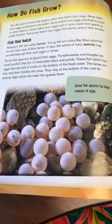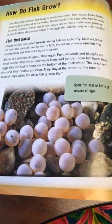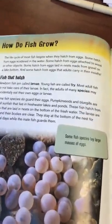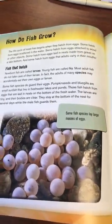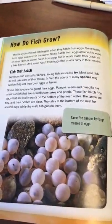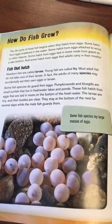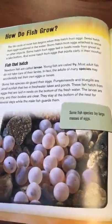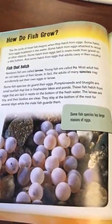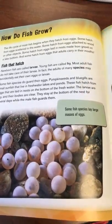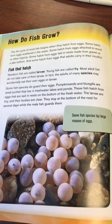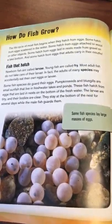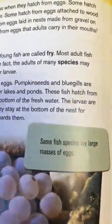Some fish species do guard their eggs. Pumpkin seeds and bluegills are small sunfish that live in freshwater lakes and ponds. These fish hatch from eggs that are laid in nests on the bottom of freshwater. The larvae are tiny and their bodies are clear. They stay at the bottom of the nest for several days while the male fish guards them.